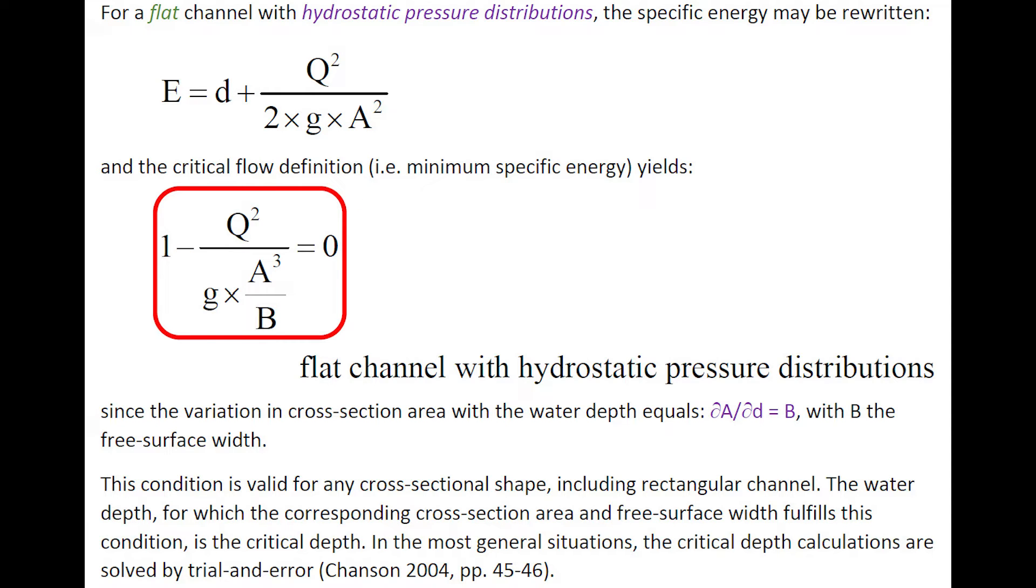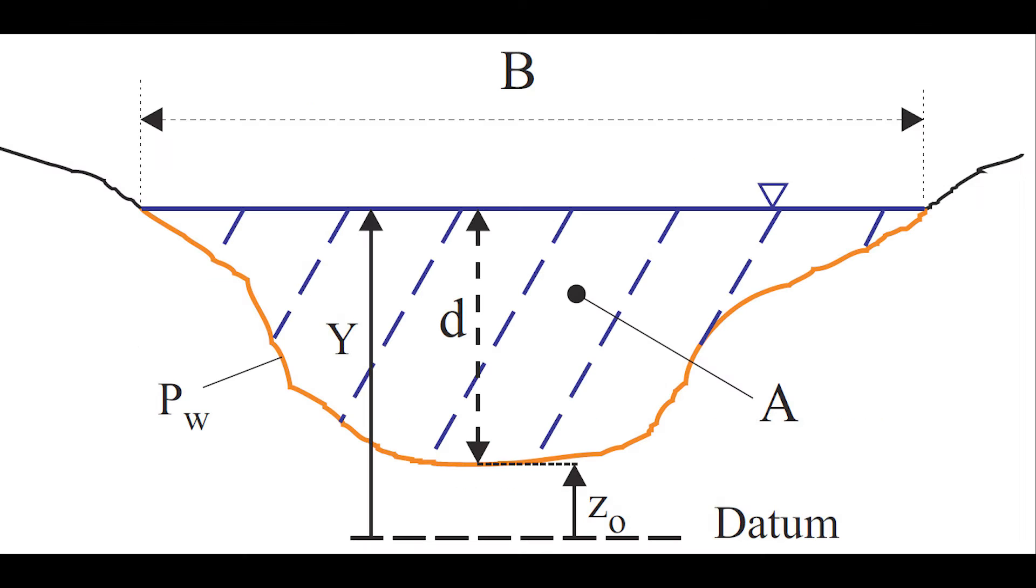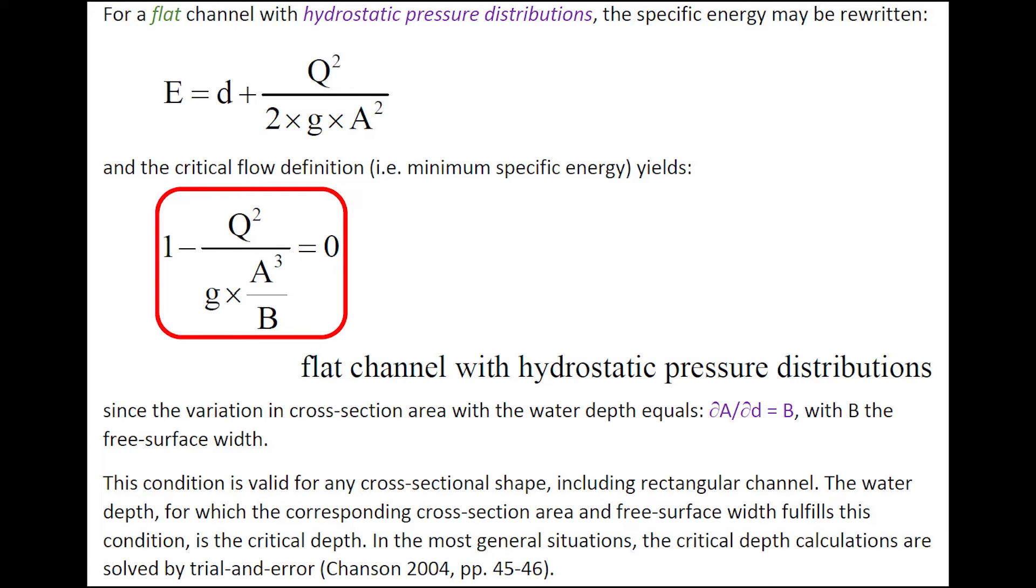For a flat channel with hydrostatic pressure distribution, we may transform the specific energy and the critical flow definition gives an expression of 1 minus q squared over g times A cubed over B equals zero, since the variation in cross-sectional area with the water depth is equal to B, the free surface width.